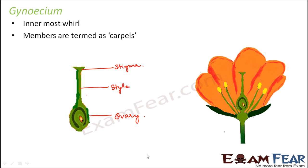Now we saw the four different whorls which make up a flower. We will spend more time understanding in detail the structure of a stamen and a carpel, because these are the two most important organs when it comes to reproduction. The male and female gametes are present inside the stamen and carpel respectively.